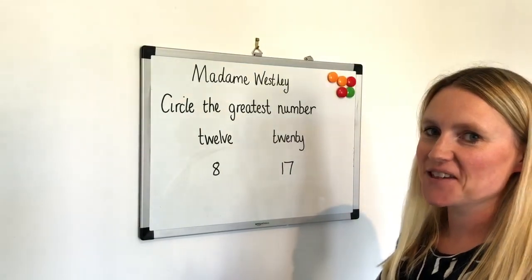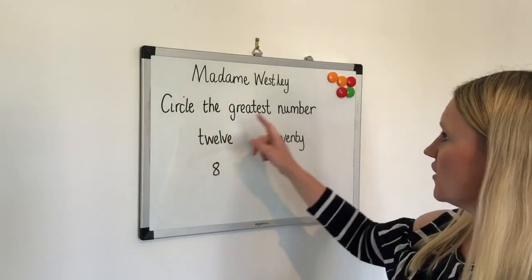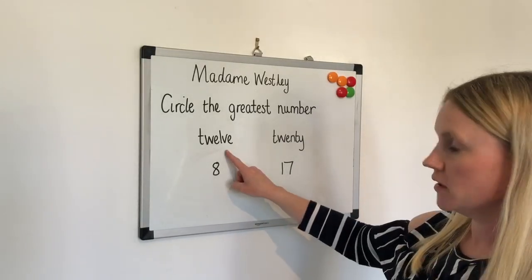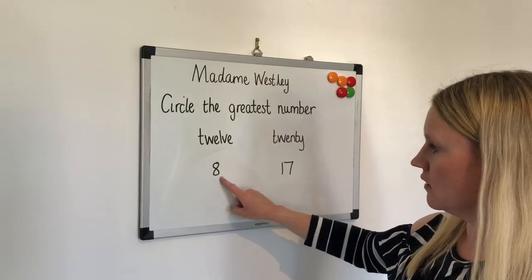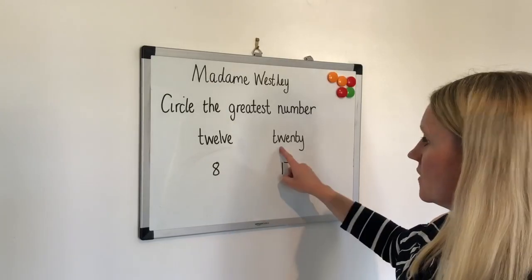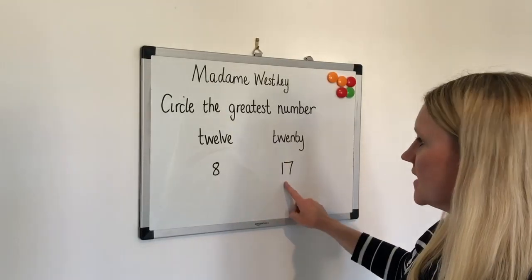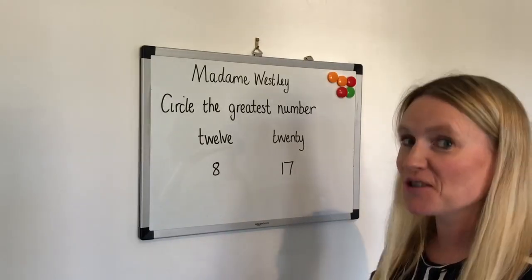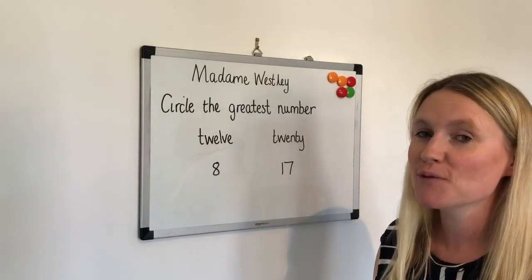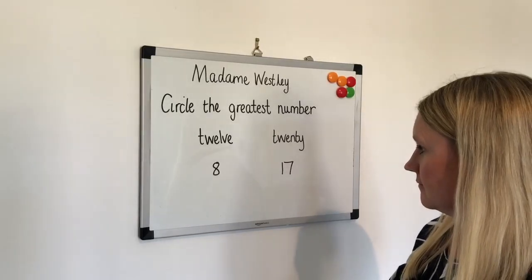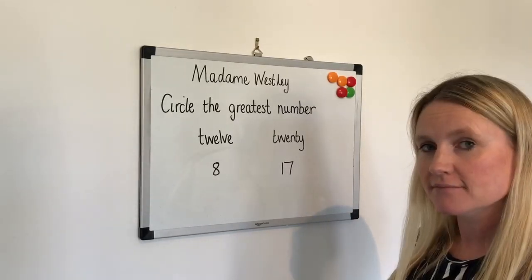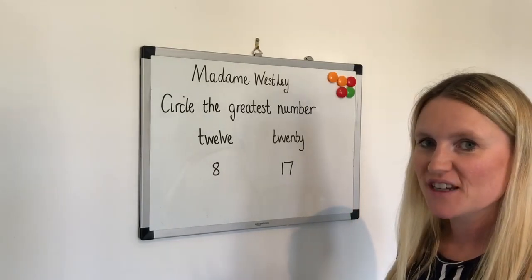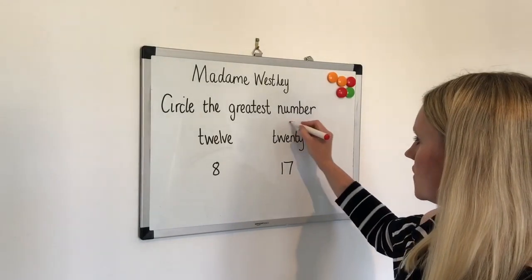On to our next question. This one says: circle the greatest number. We have 12, 8, 20, 17. On your board, write down the greatest number. Well done — the greatest number is 20.